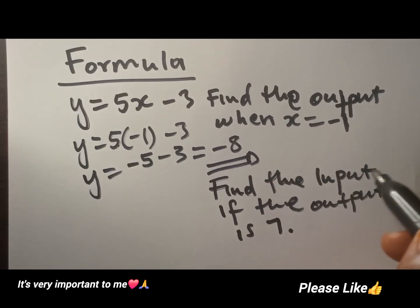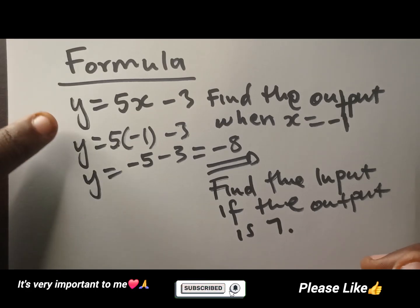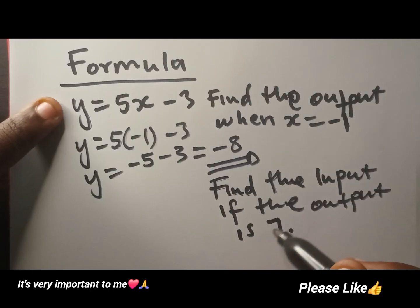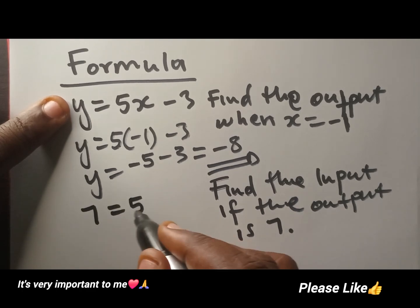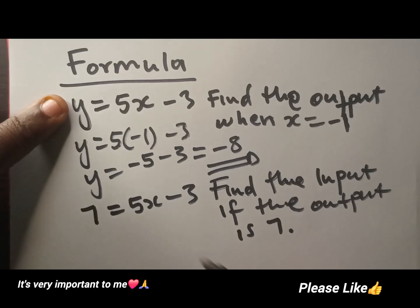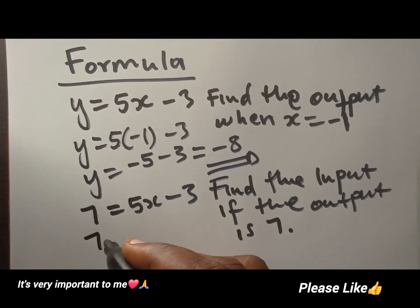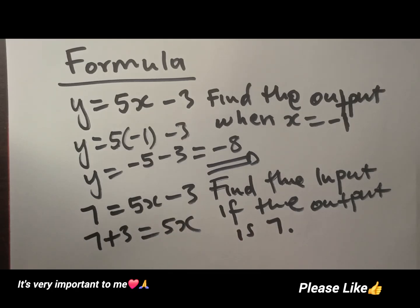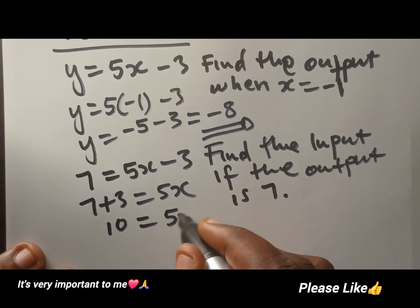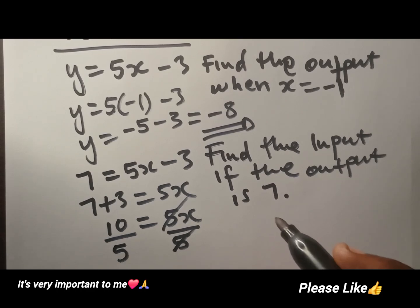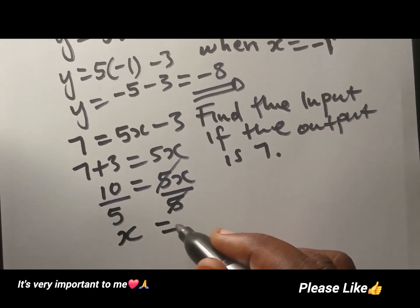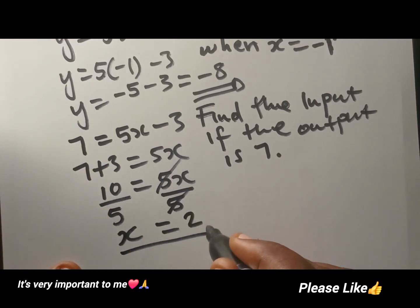What about this one? They say find the input if the output is 7. We are following the same rule or the same formula. The output we know is the answer, or is the y. So y will be 7, equal to 5x minus 3. Now we need to solve for x. You take this 3 to the other side, so this side will have 7 plus 3 equal to 5x. This is going to be 10 equal to 5x. We need x to be alone, so we divide by 5 both sides. This 5 will be removed by this 5, and we are left with x equal to 10 divided by 5, which is going to be 2. So this is going to be our input.